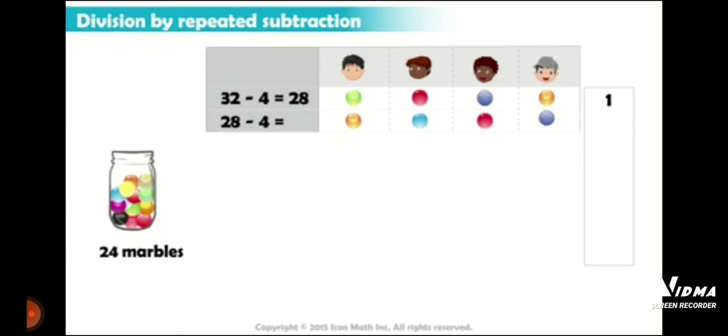Now each child will get one marble again. We are having 28. Out of these 28 we have given one to each, that means four marbles. Now we are left with 24 marbles.